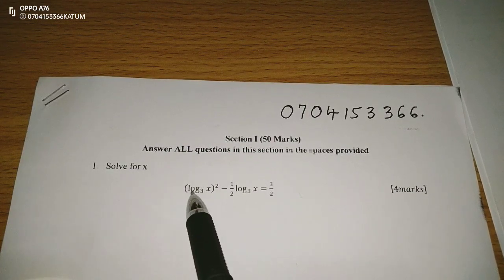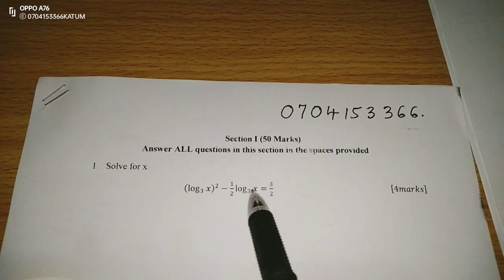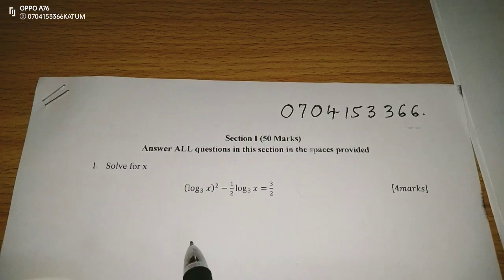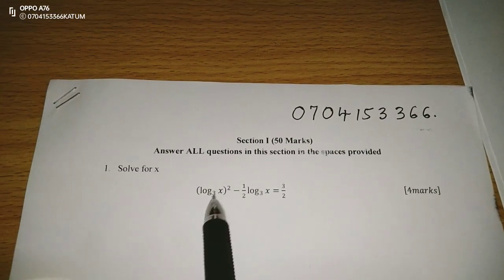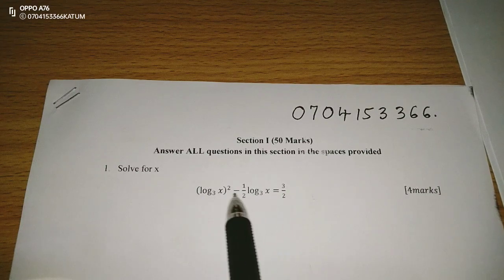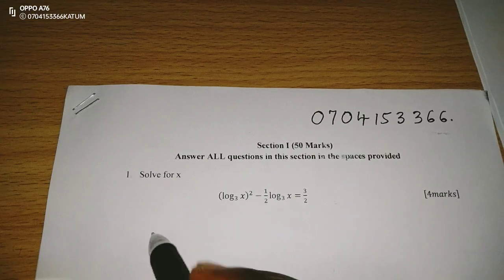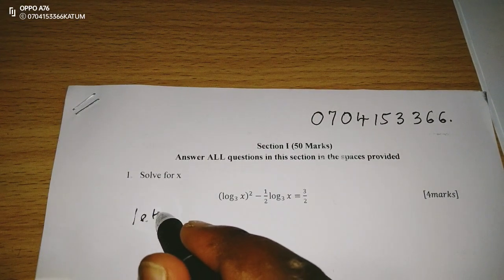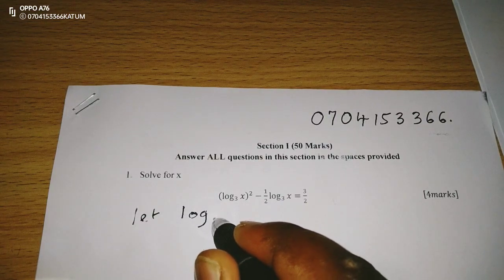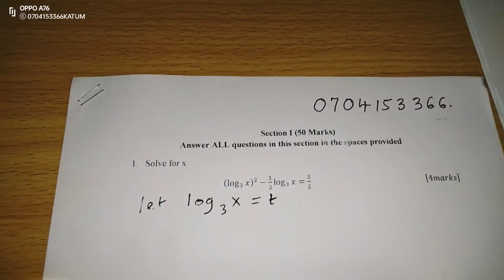Solve for x in the logarithm of x to base 3 squared minus half the logarithm of x to base 3 equals 3 out of 2. What we should start by doing here is, because we can see the logarithm of x to base 3 is appearing twice, we can let it be a certain unknown. For instance, we can say let the logarithm of x to base 3 be something like t.